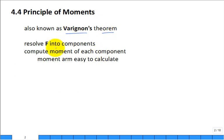What you do is you resolve the forces into components, into the Fx, into the Fy, into Fz, and then you look to calculate the moment for each of the forces. So the Fx creates a moment about that point, and you usually can find that moment arm very easily.